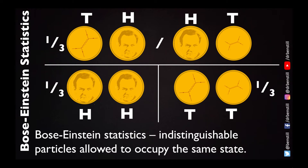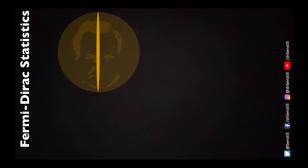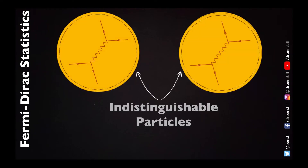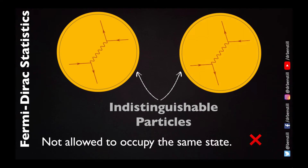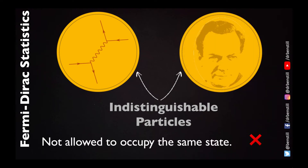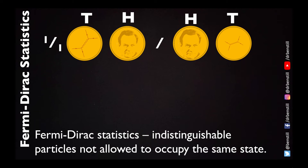We've gone from a probability of a quarter to a third, which is an increase. The third type of statistics is Fermi-Dirac statistics, which dictate the way fermions behave. Fermion particles are again indistinguishable from one another, but unlike bosons they are not allowed to occupy the same state. This means the heads-heads and tails-tails states are no longer allowed, leaving only one state: the combination of heads and tails. With a fermion coin we end up with a 100% probability of getting a heads-tails state.